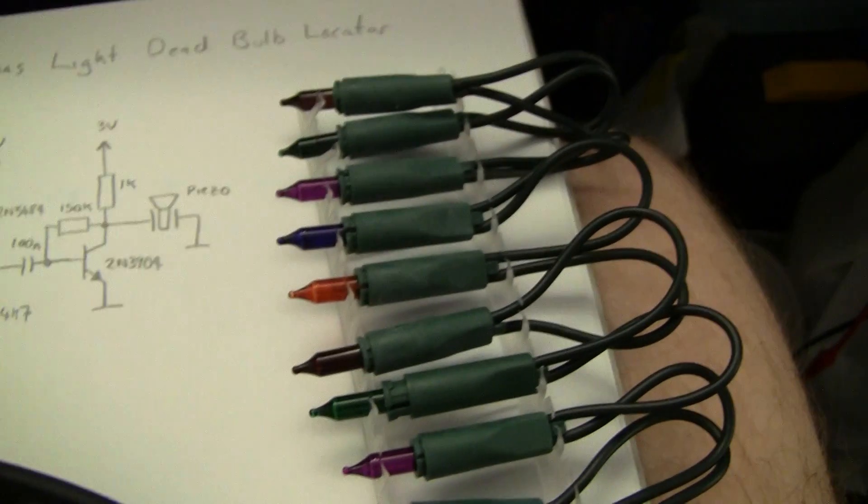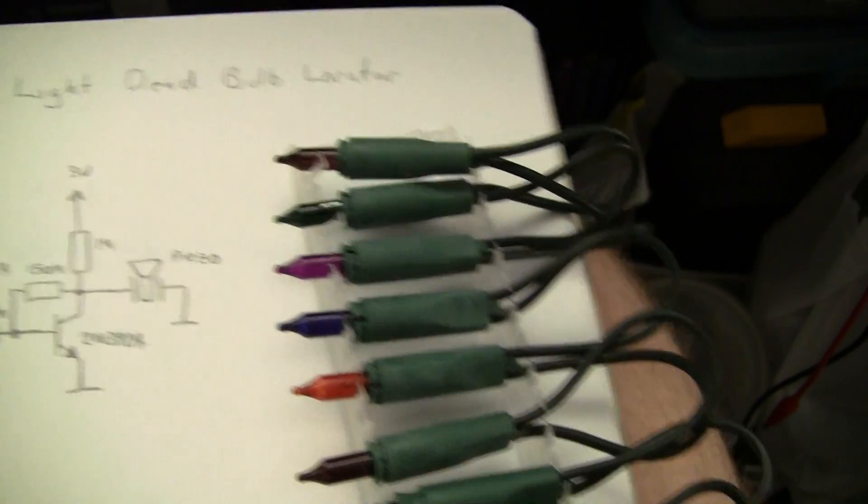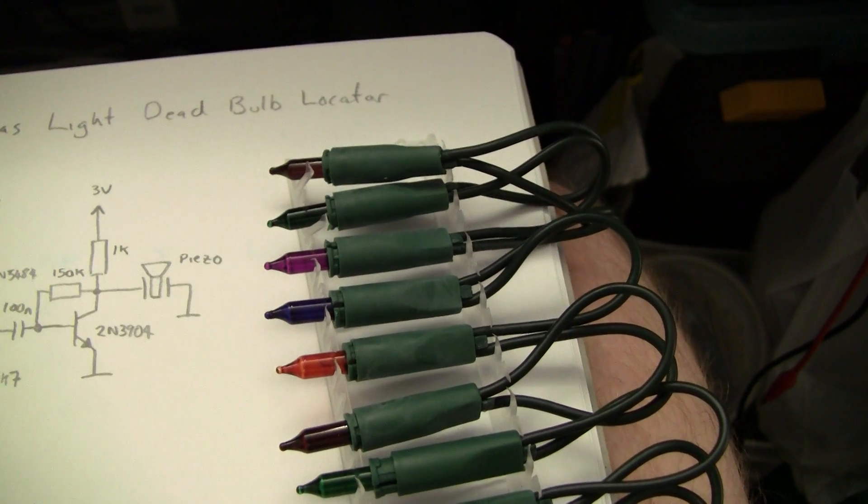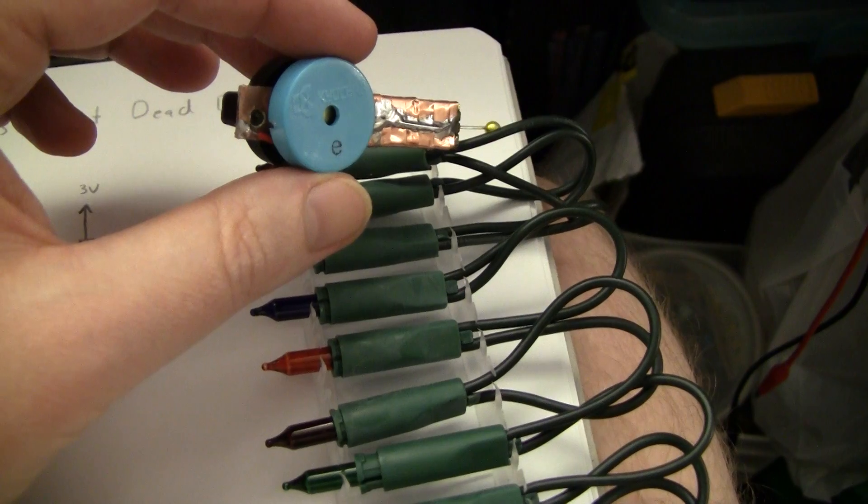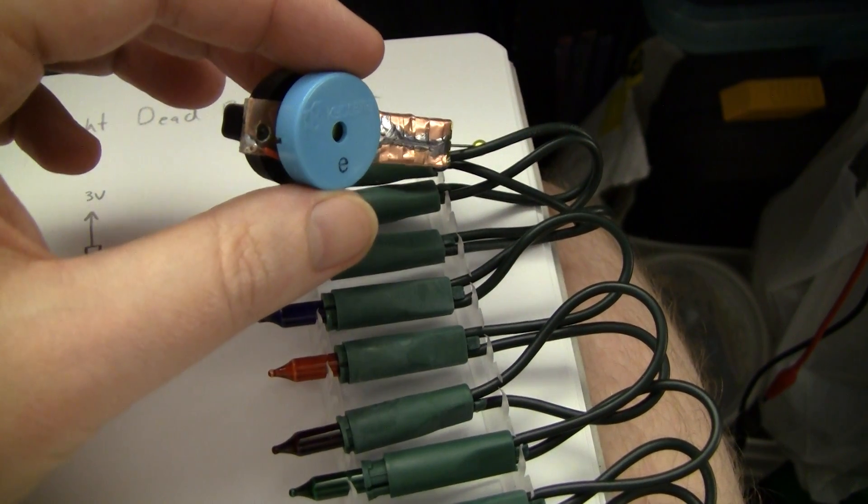But for our purpose of finding which bulb is dead, we can use the noise on the mains that naturally occurs. So you can hear it's picking up all kinds of rubbish from the mains.